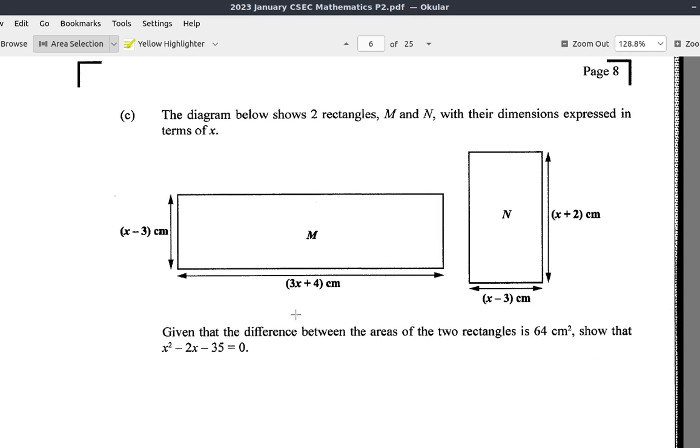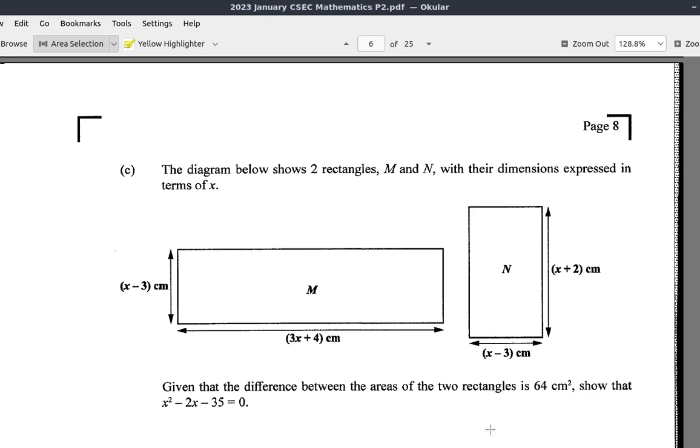For part C, it's not really for you to find an answer. You're going to show that when you work this out, you get x squared minus 2x minus 35 equals 0. Make an attempt at it. Spend at least 30 minutes working it out. Take your time.